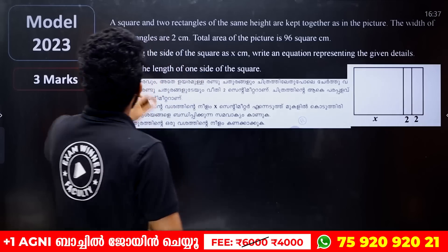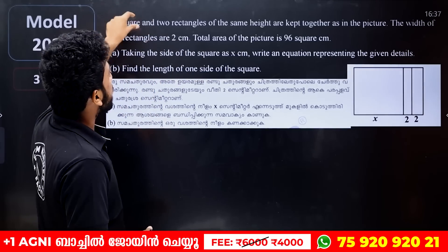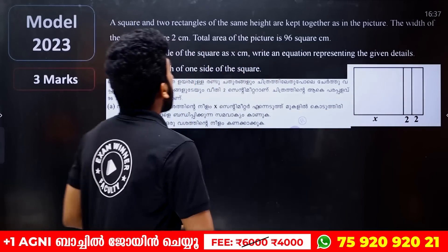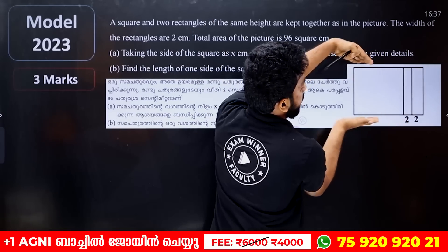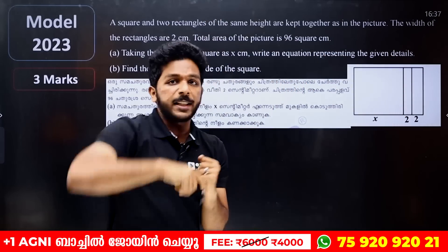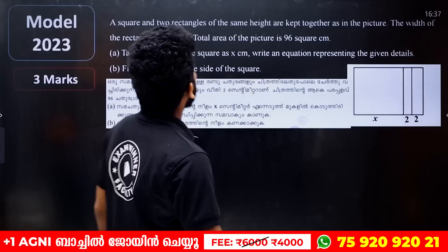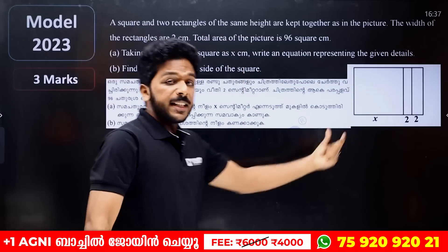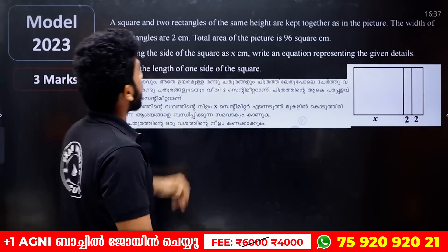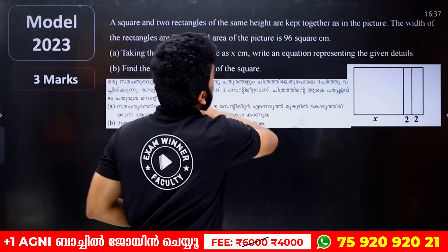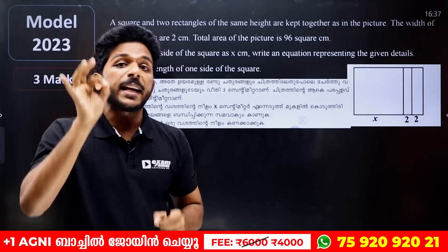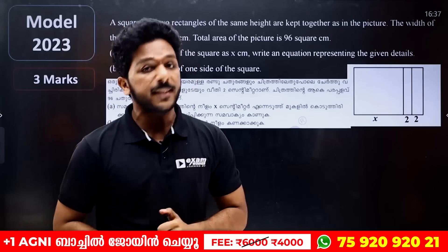If you have a square and two rectangles — two rectangles — that is the same height. This square is not the same height; it is not the same height. The width of the rectangles is 2cm. And the total area of the picture is 96 square centimeters.